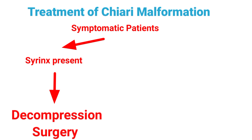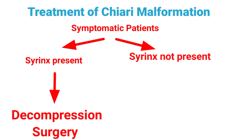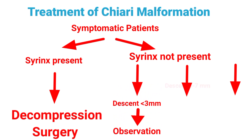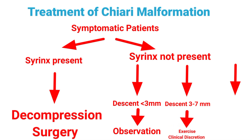If the patient is symptomatic and there is no syrinx, we have three options. You can see the importance of different investigations in planning the treatment. If the descent is less than 3 mm below the foramen magnum, we go for observation. For a descent of 3 to 7 mm, we advise exercises and clinical judgment plays a role. If the descent is greater than 7 mm, we go for decompression surgery.